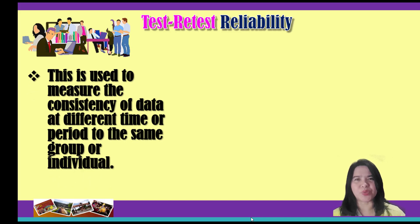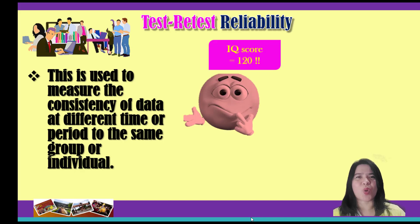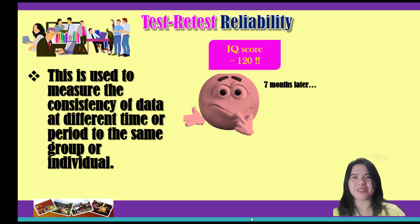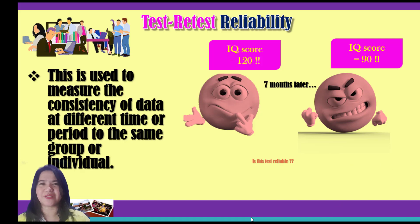Test-retest reliability is used to gauge the consistency of scores over time for the same person or group at different time periods. A reliable test should yield similar scores or data over time. For instance, you take an IQ test and score 120, then after seven months you take the same test again but score 90. Do you think this test is reliable? I think not.